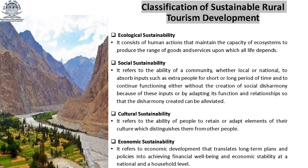The second category is Social Sustainability. It refers to the ability of a community, whether local or national, to absorb inputs such as extra people for short and long periods of time, and to continue functioning without creating social disharmony, or by adapting its functions and relationships so that any disharmony can be alleviated. It also means identifying and managing business impacts, both positive and negative, on people. The quality of a company's relationship and engagement with its stakeholders is critical.